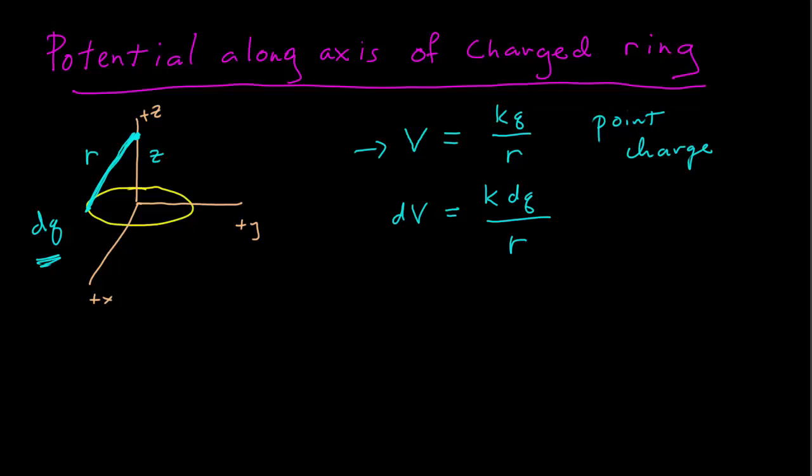And then if the radius of our ring, we call that A. And so then we have that R is equal to the square root of A squared plus Z squared.